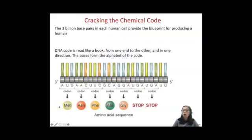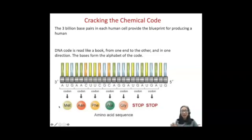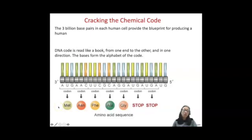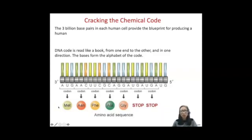The information on the DNA for the human genome includes three billion bases — three billion base pairs that have to be copied — and that's all of the information to make a human. Reading the information that's encoded on DNA, that guidebook, is not like reading a book. It is a secret code, and scientists have cracked that chemical code of DNA.